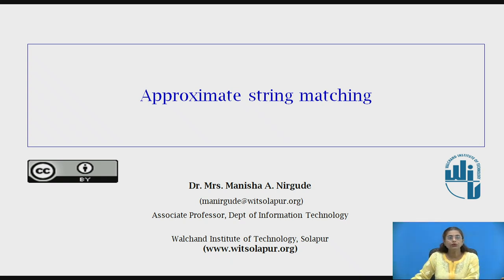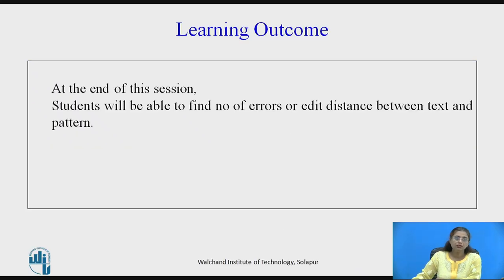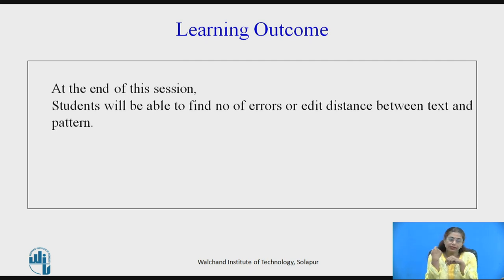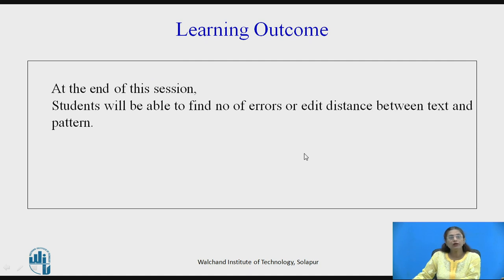Hello everyone, today we are going to see approximate string matching. What do we mean by approximate string matching? While typing, sometimes we make spelling mistakes. Still, we can retrieve documents based on that corrected word. How many errors are allowed determines how a particular word will be corrected. The learning outcome for this session is that students will be able to find the number of errors or edit distance between text and pattern.